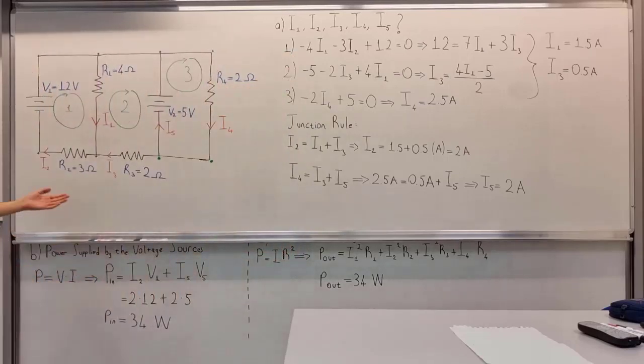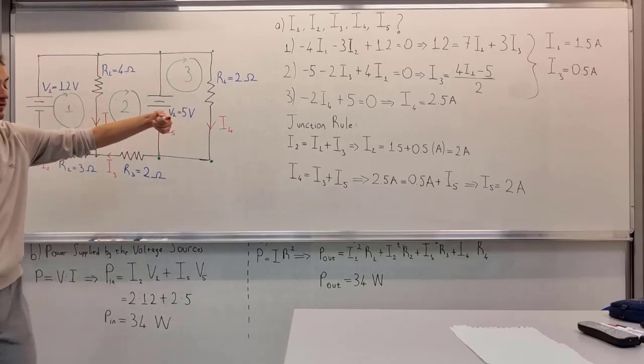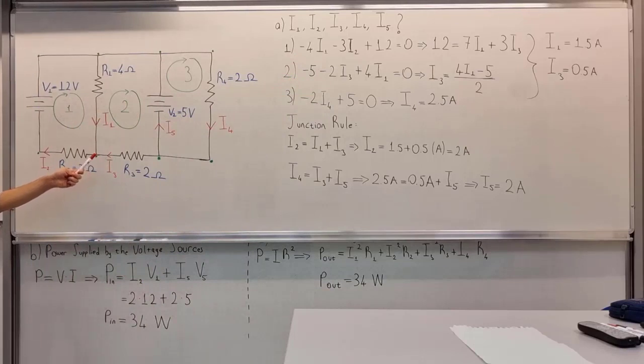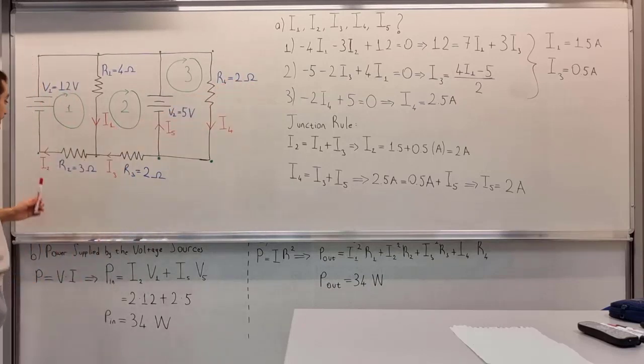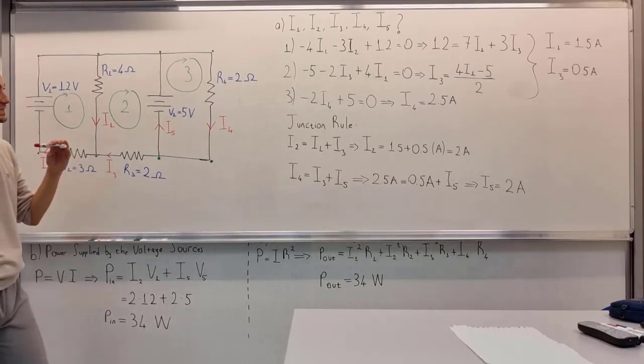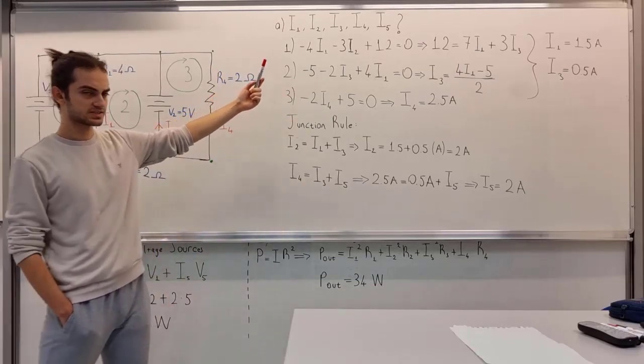On the first loop, I start from here, then go here. While I'm going from point A to point B, we have R1 equal to 4, so it has to come with a minus sign. From going point B to point C, I2 is still in the same direction, so minus 3I2. From point C to point D, the voltage source is in the same direction, so it comes with a positive sign. This is our first loop equation.